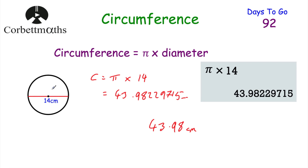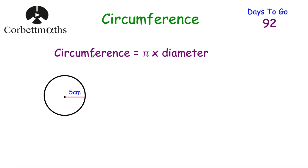To find the circumference of a circle, you just do π times diameter. Some teachers use the formula circumference = 2πr. Instead of π times diameter, you may have seen circumference = 2 × π × radius. If you think about it, doubling the radius gives you the diameter, so this formula is just the same. In this video I'll be using circumference = π × diameter, but if you prefer 2πr, feel free to use that.